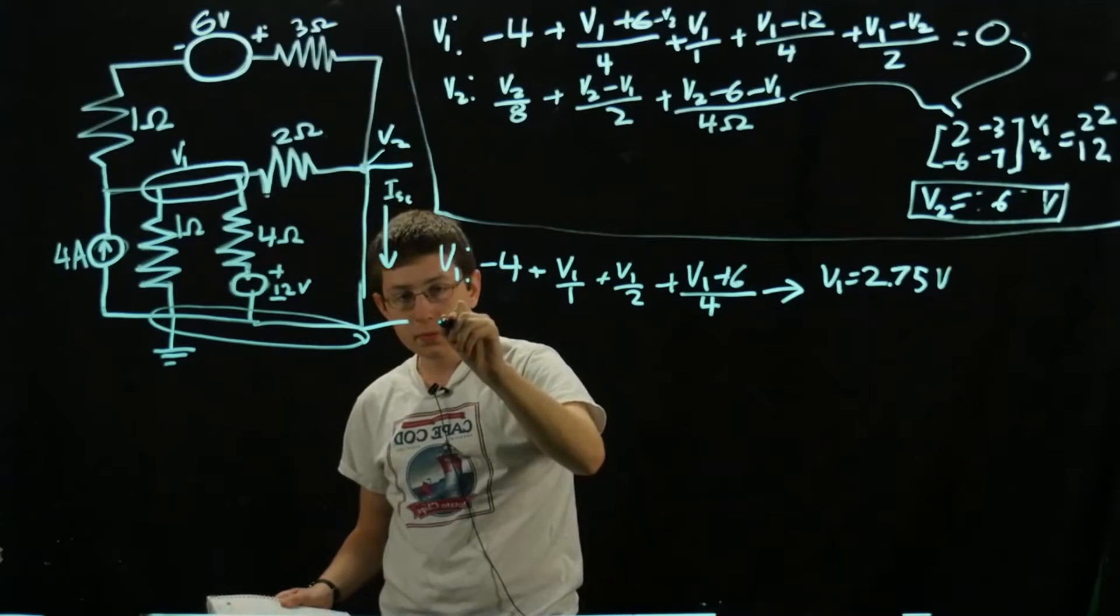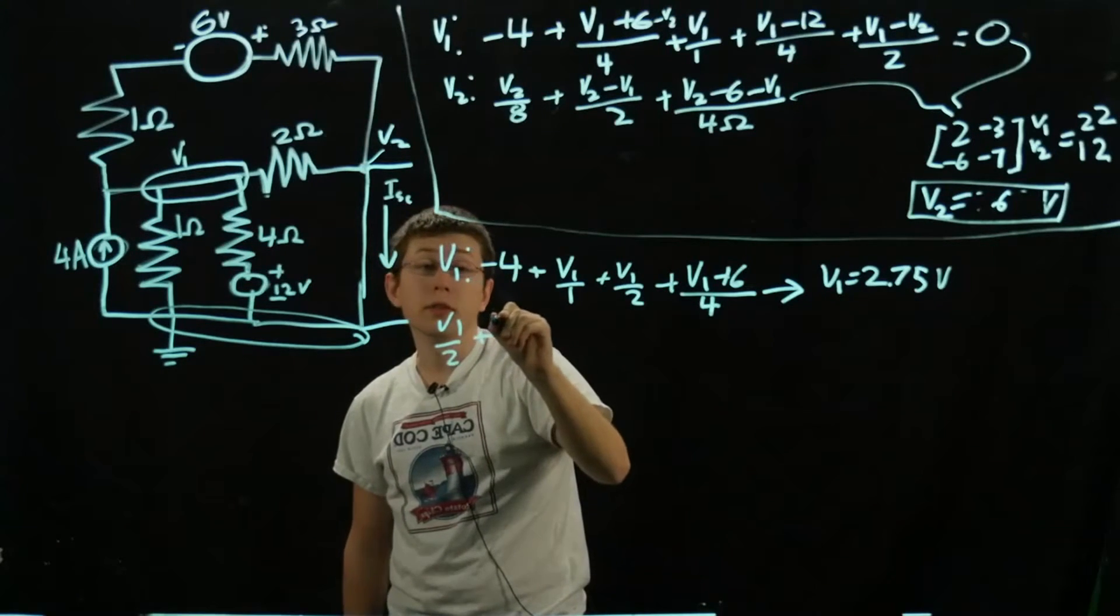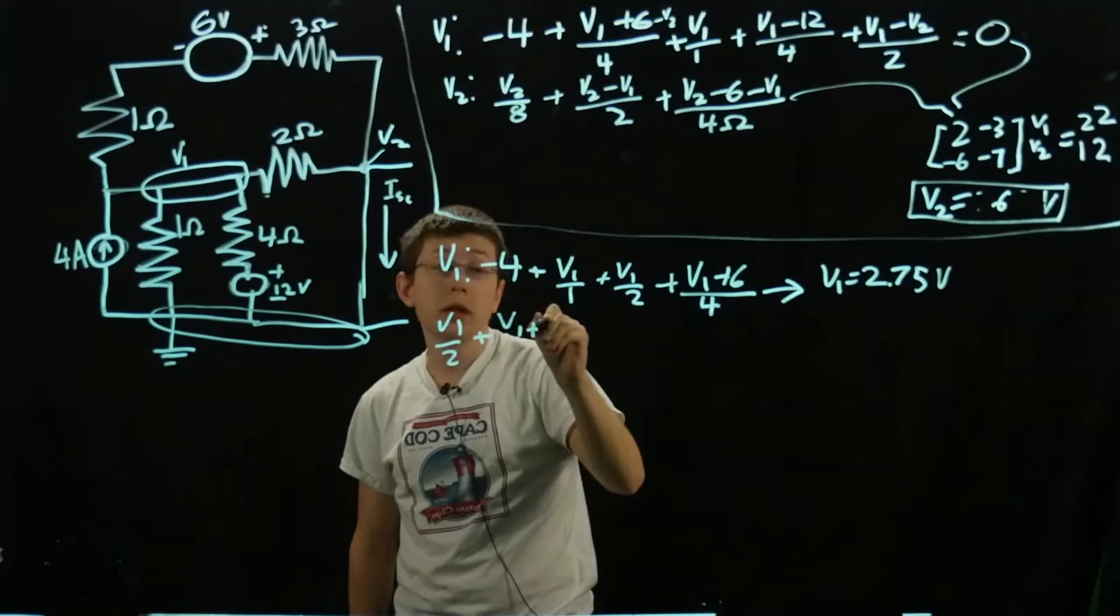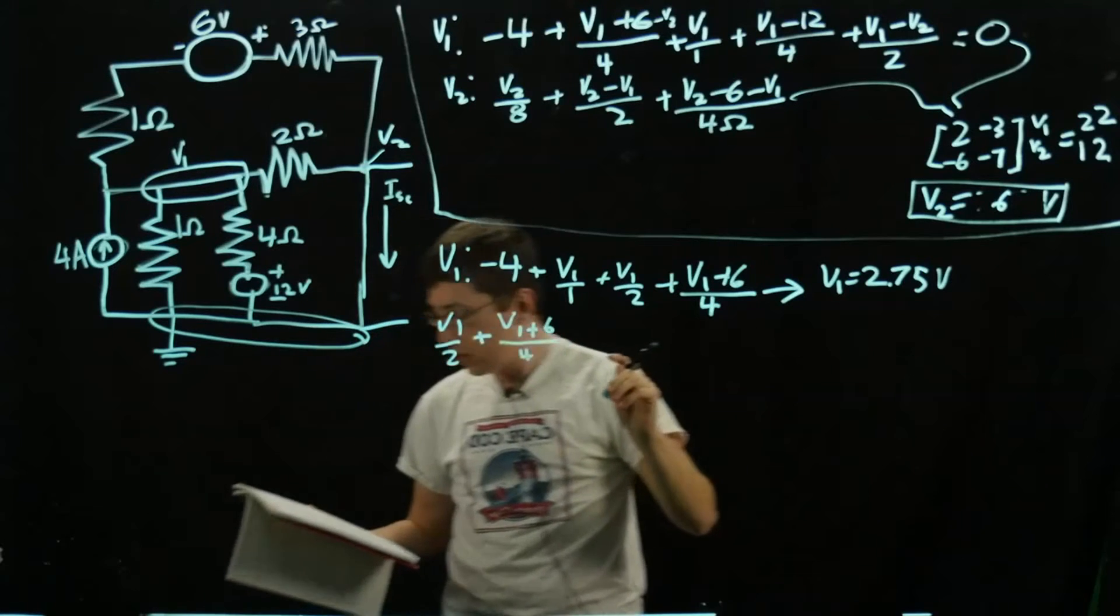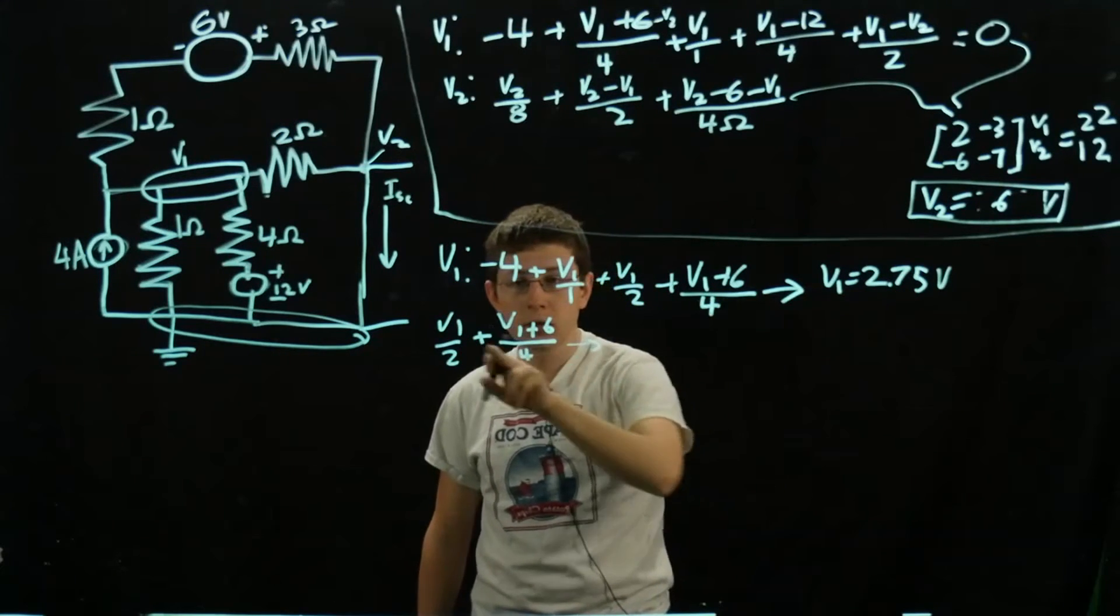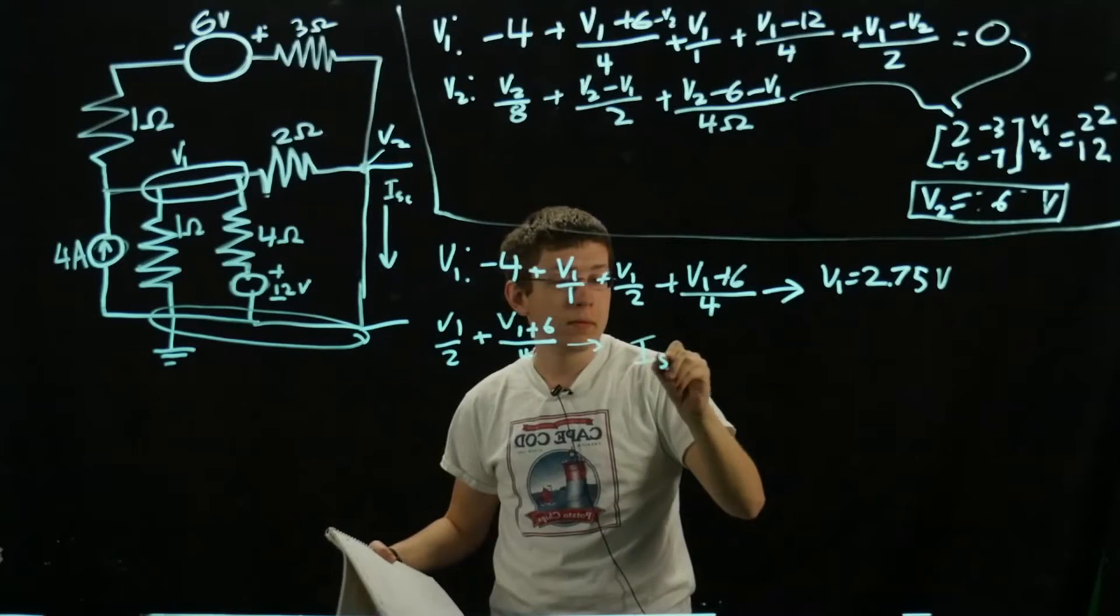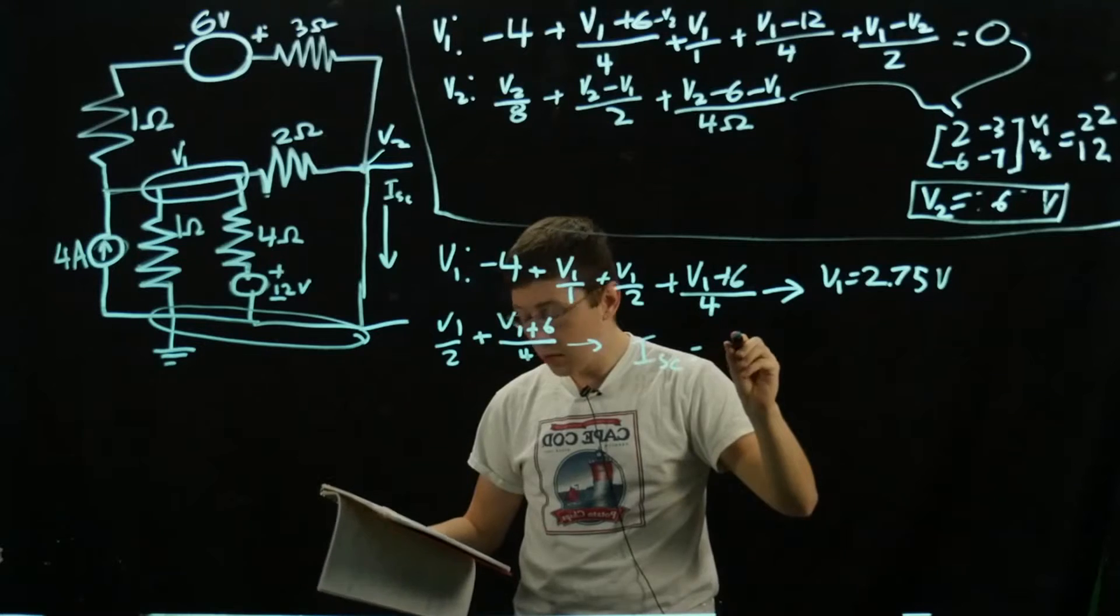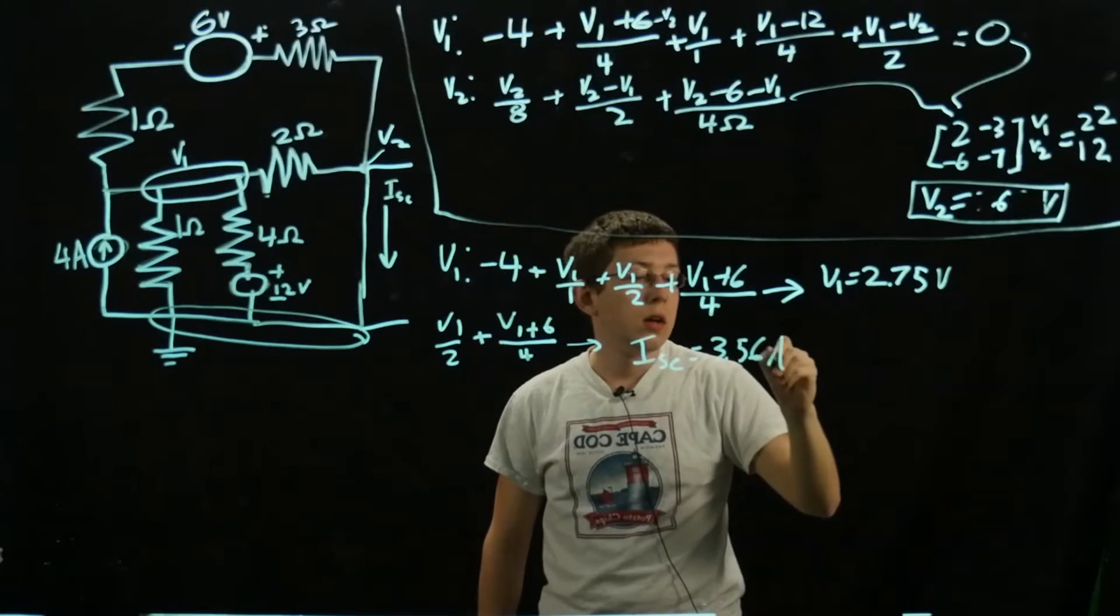We'll have V1 over 2 plus (V1 + 6) over 4. We just plug in our value of 2.75 volts for V1, and we end up with an ISC of 3.56 amperes.